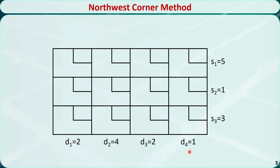In the first step, we need to find the Northwest Corner cell of this tableau, which is this cell. We need to allocate as much as possible to the selected cell and subtract the allocated amount from supply S1 and demand D1. The largest amount we can allocate is 2, because if we allocate more than 2, D1 will be changed to a negative number. We put 2 here and subtract it from D1 and S1. D1 will be 0, S1 will be 3.